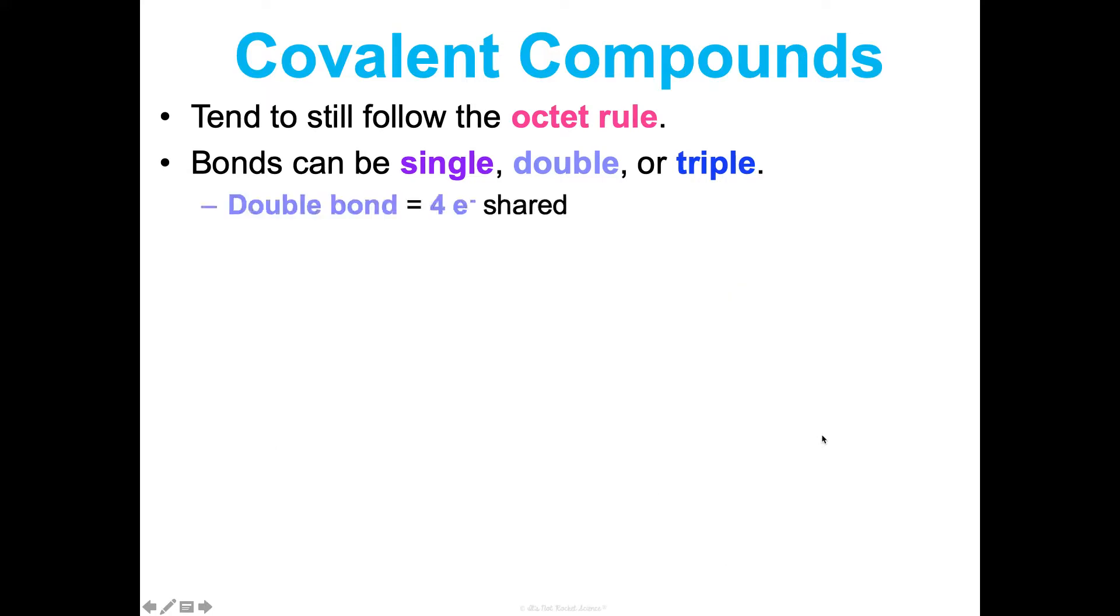But they can also form double bonds, which is where you're going to share four electrons between two different atoms. So looking at O2, we draw the Lewis structures for each of those atoms, which we've done also in our activity at the beginning of this unit. Those would share and those would share. So that's going to form a double bond between these two oxygen atoms, two dashes representing four electrons shared.